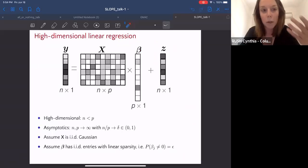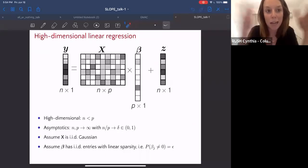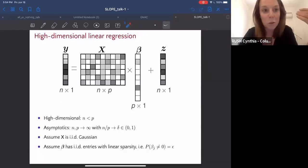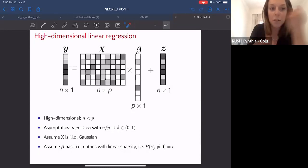While sorted L1 regularization can be used in many problems, I'm going to keep it simple today and just talk about high-dimensional linear regression. We're thinking of output Y equals X beta plus noise. My X matrix is high-dimensional, short and wide. I'm in the usual asymptotic regime where the ratio of the rows and columns is some fixed delta. We'll assume that the matrix is IID Gaussian and my vector of coefficients beta is sparse with IID entries. We have linear sparsity, so a fraction of the elements are non-zero and that fraction stays fixed as n grows.